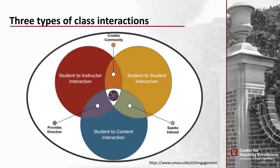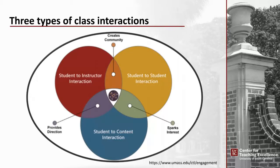Now I'm going to turn it over to Aisha, who will talk about types of class interactions. Thank you, Jennifer. Before I begin, I'd like to share that I am a person who stutters, so it may take a little longer to hear all of my ideas about creating a community of learners. Within the social, physical, and psychological focus areas, there are three types of interactions that should be planned for: student-to-instructor, student-to-student, and student-to-content interactions.